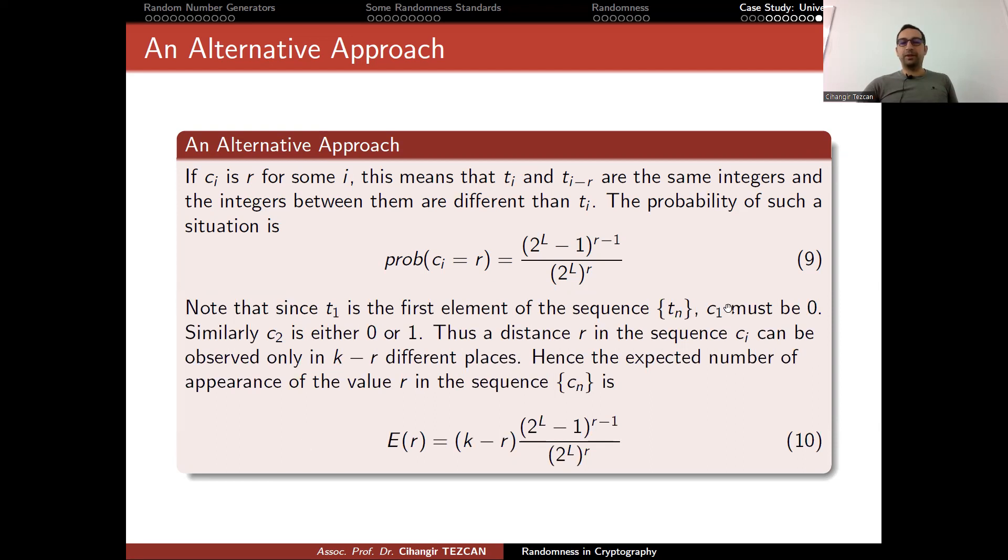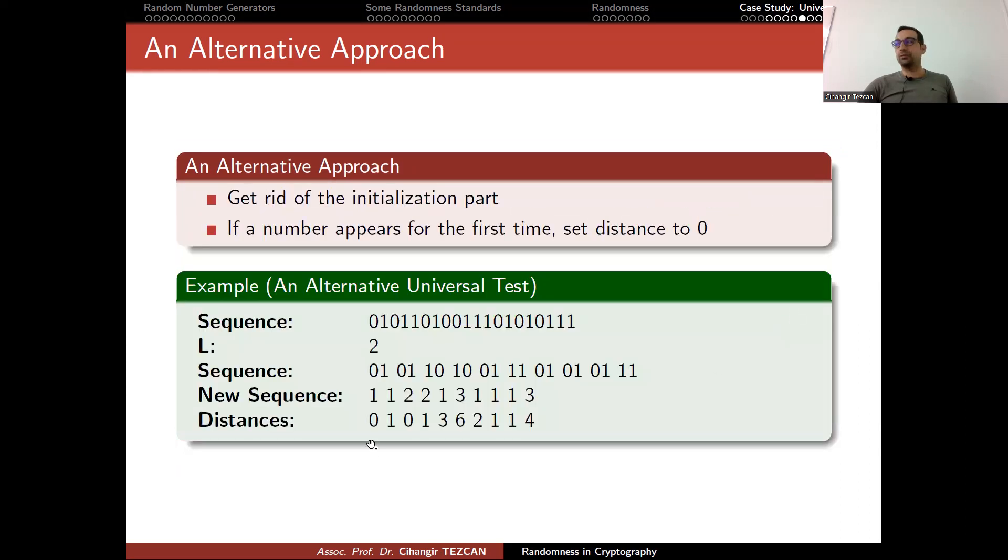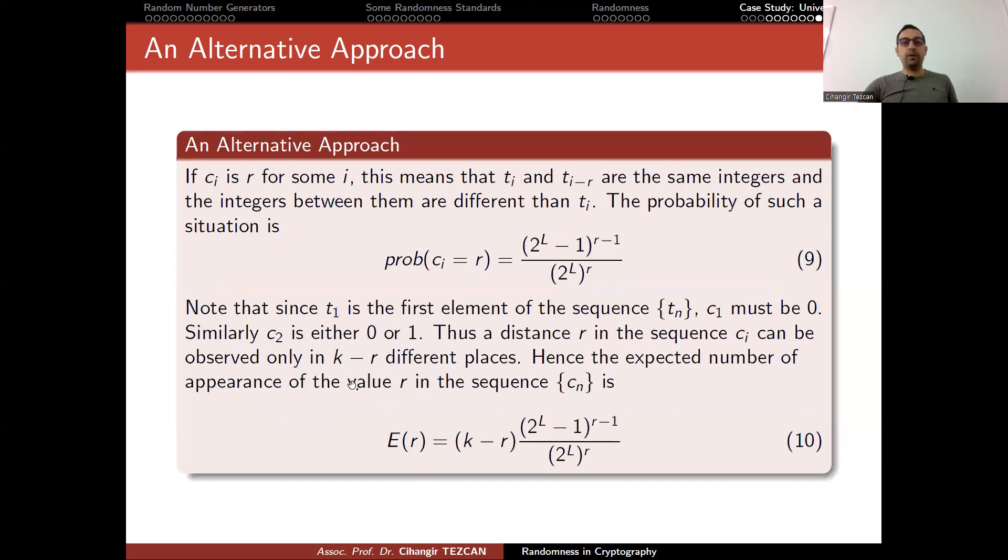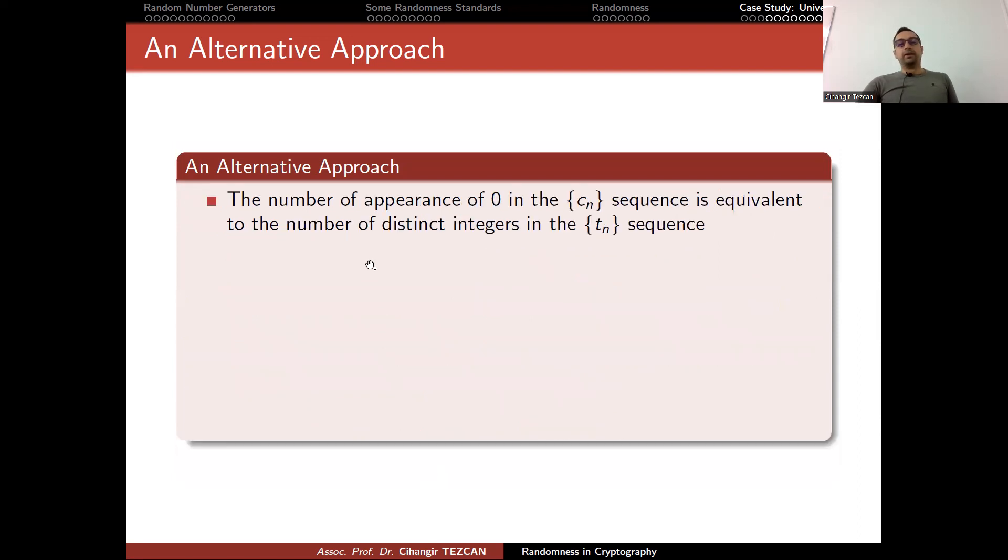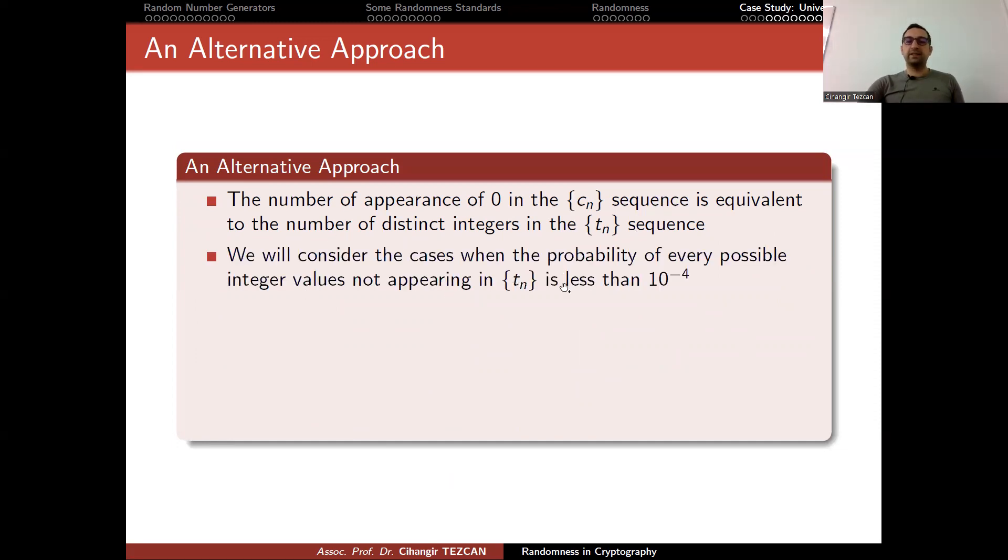Note that since T_1 is the first element of the sequence, T and C_1 must always be zero. If we go back to the example, this has to be zero, regardless of this value. Similarly, C_2 is either zero or one. Thus, the distance R in the sequence C_I can be observed only in K minus R different places. Hence, the expected number of appearance of the value R in the sequence is K minus R multiplied by this probability. So we had the expected value.